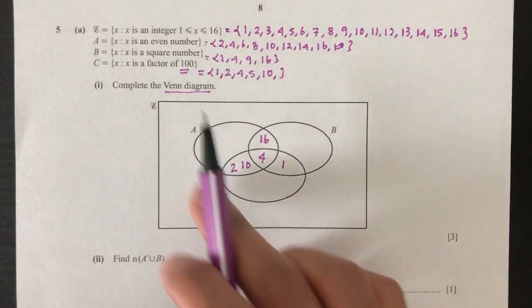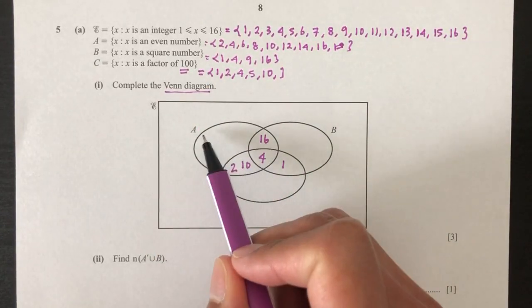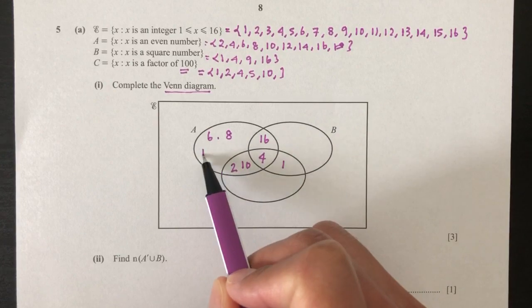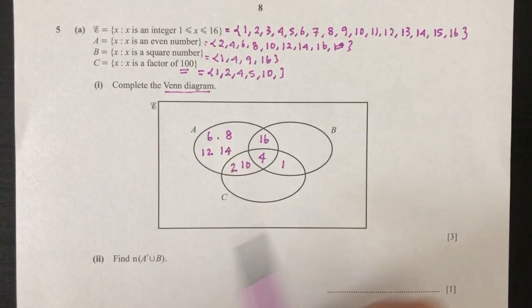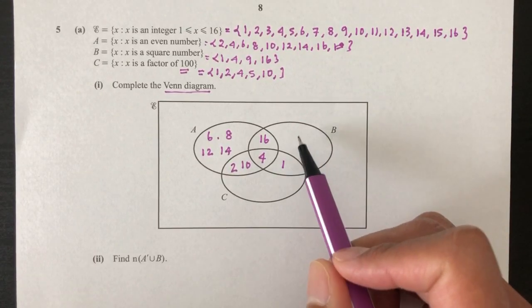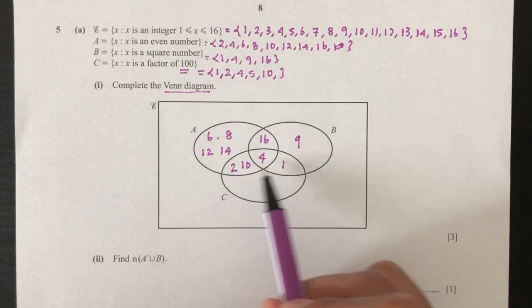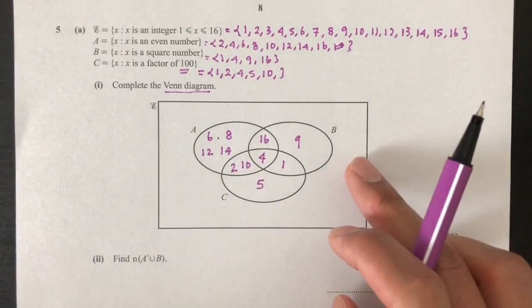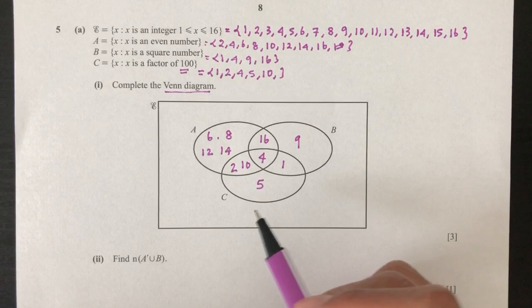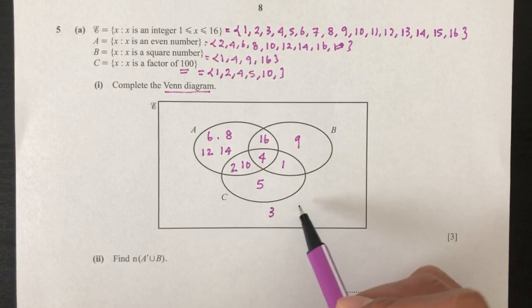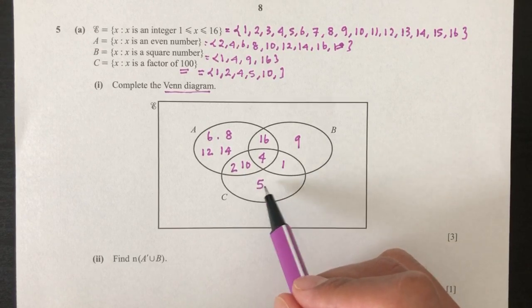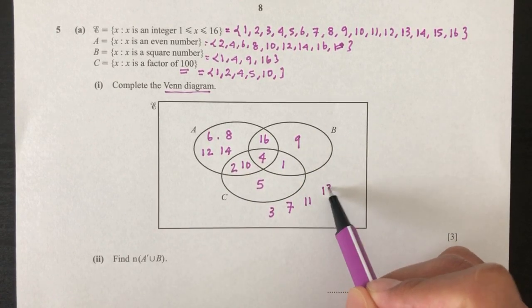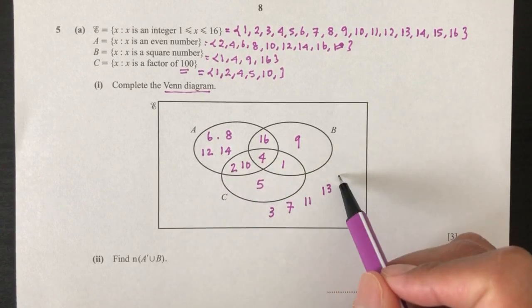And the rest will be just outside. So A will be 6, 8, 12, 14. And that's it for A. For B will be 9. So C will be 5. Now what is outside of these sets? Let's see. We have 1 is here, 2, so 3 we don't have, 4 is here, 5, 6, 7, 8, 9, 10, 11, 12, 13, 14 will be right here, 15.